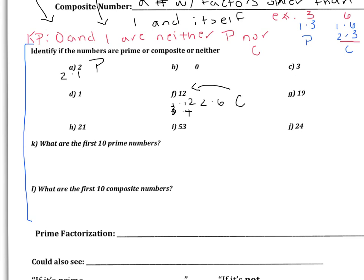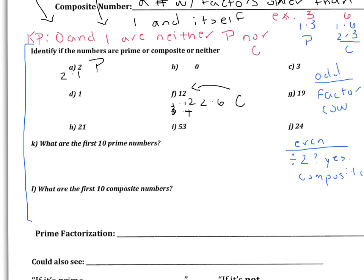Quick tips to help you: if it's an even number — ending in 2, 4, 6, 8, or 0 — check if you can divide by 2. If you can, it's composite, because 2 is then a factor. Note that 2 itself is our first prime, so 2 doesn't count. If a number is odd, go ahead and make a factor table if you aren't sure. Once you've found factors beyond 1 and itself, it's composite. Pause the video and press play when you're ready to see the answers.